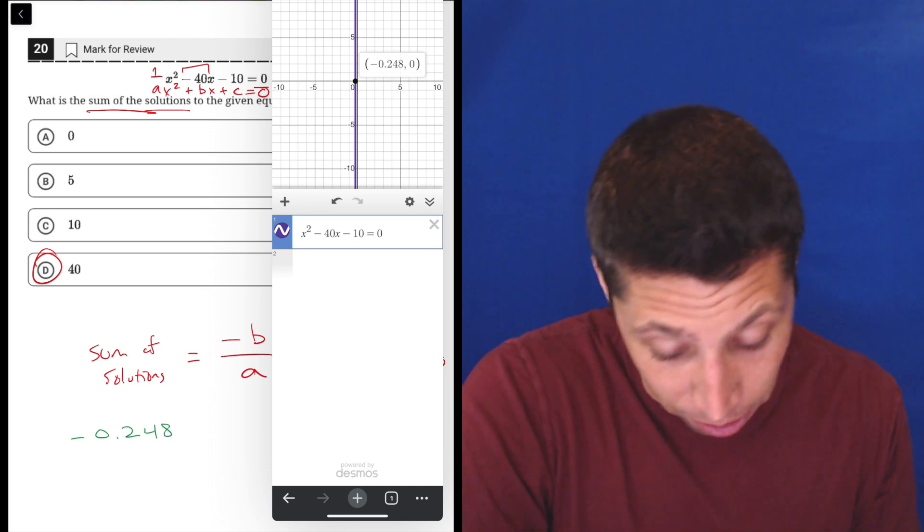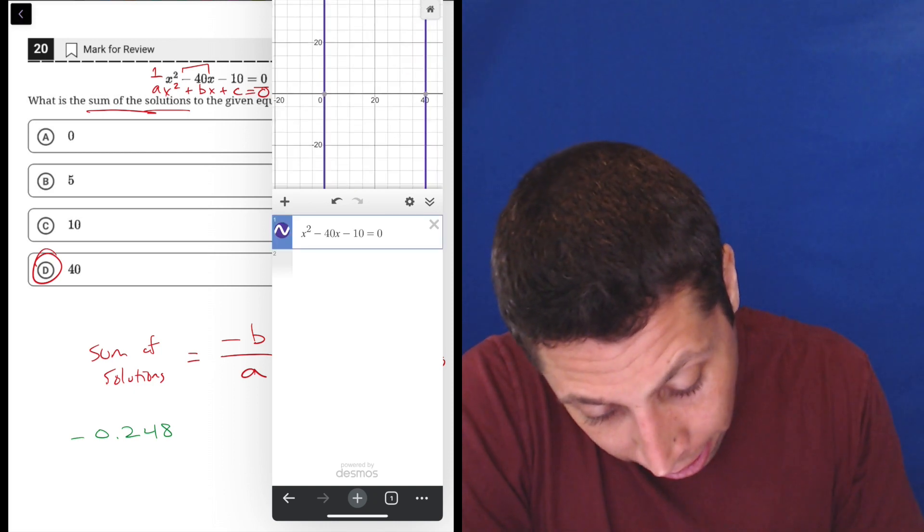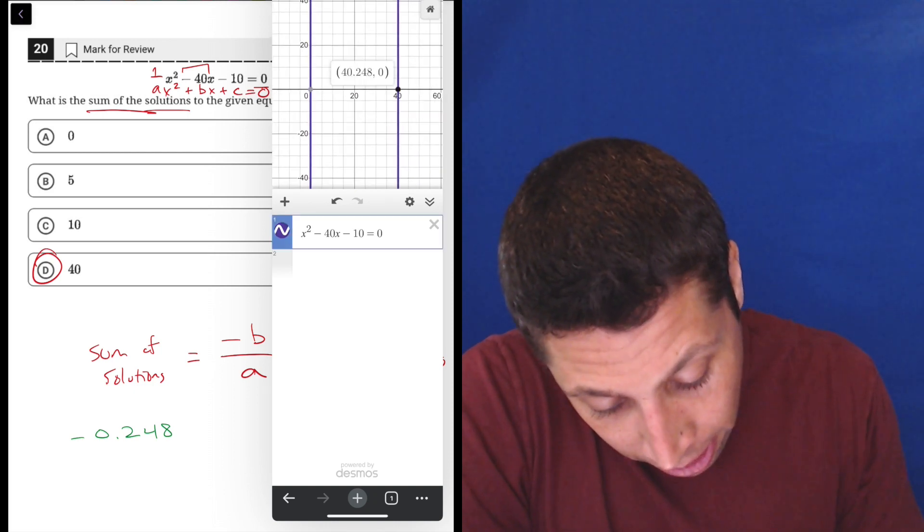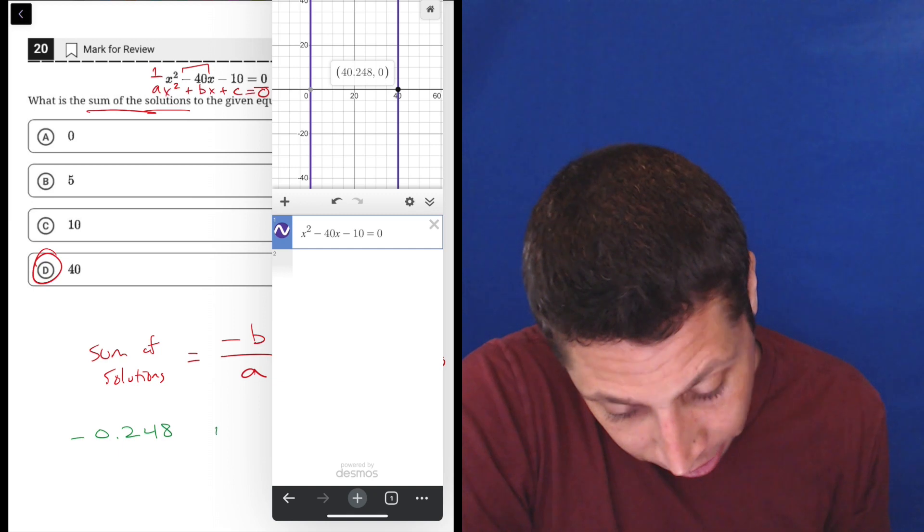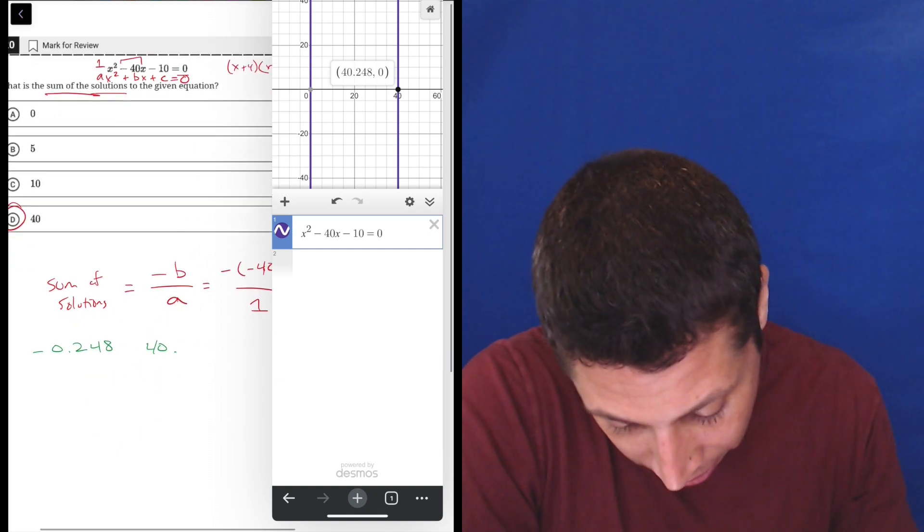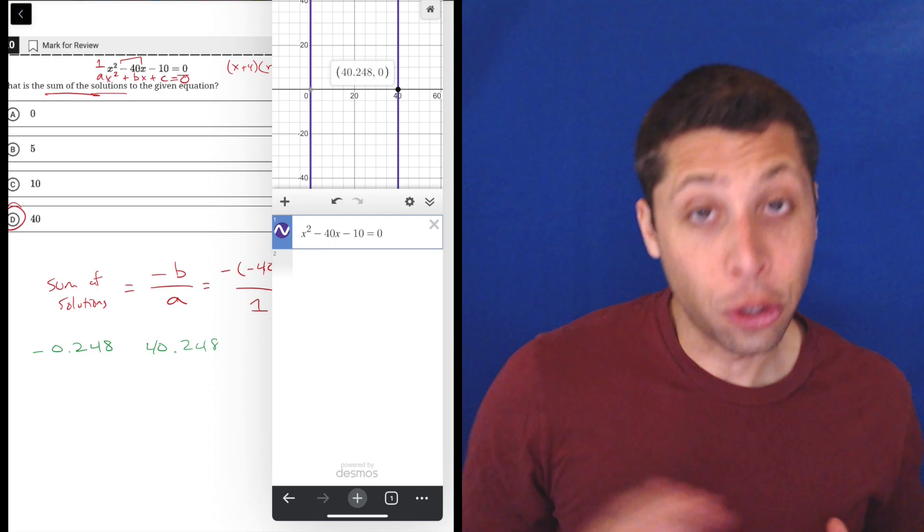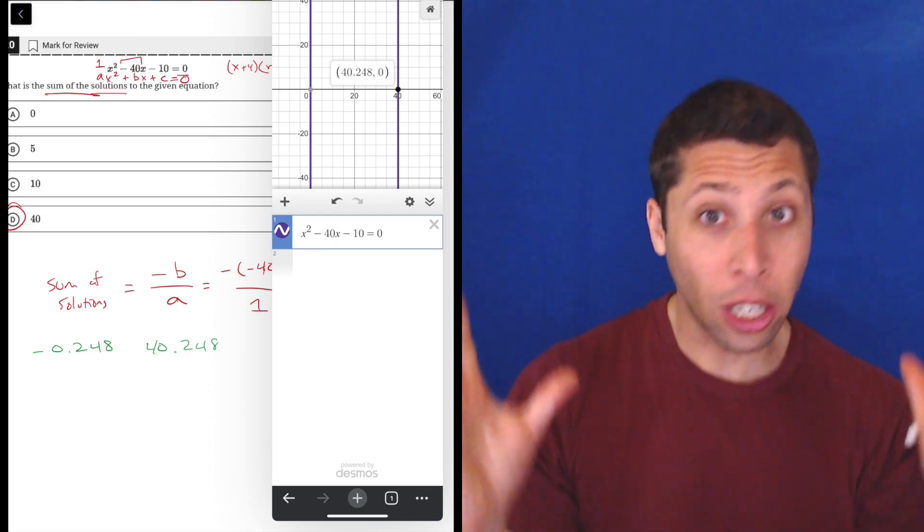And so, one of them is negative 0.248. Now, I can find the other one. I have to just zoom out, and eventually, it's going to appear. And there it is. And I can tap it, and it is 40.248. So, these are two vertical lines. They never touch. They never curve.